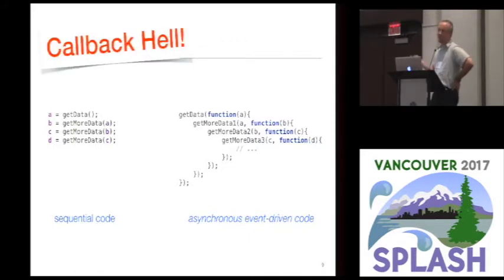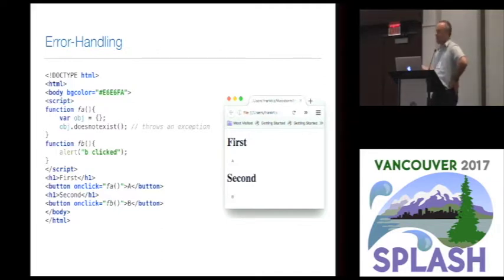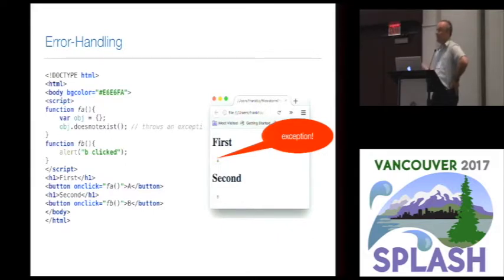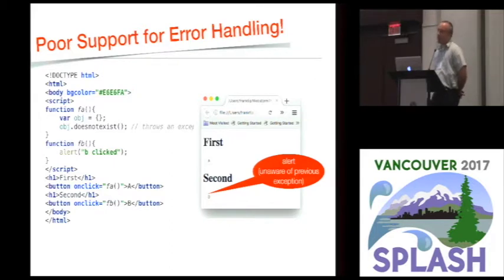That leads to something sometimes referred to as callback hell, which is very unpleasant because it leads to deeply nested code that becomes really difficult to read. Then there are some issues with error handling in event-driven code. Here's a small example showing two buttons in a web page. When you invoke the onclick handler for the first button, an exception occurs. But after that exception has occurred, this being JavaScript, control flow will just go back to the top level. You can then click the second button and it will execute as if nothing happened — there's no awareness of the earlier exception because each event handler is invoked separately from the top level. So there's very poor support for error handling.